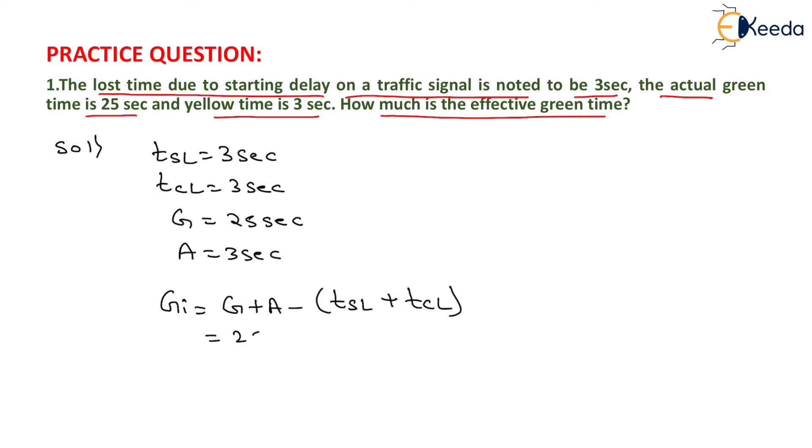On putting the values, G equals 25 seconds, A equals 3 seconds, minus total startup loss time equals 3 seconds and clearance loss time equals 3 seconds. On solving this, we will get the effective green time equal to 22 seconds.